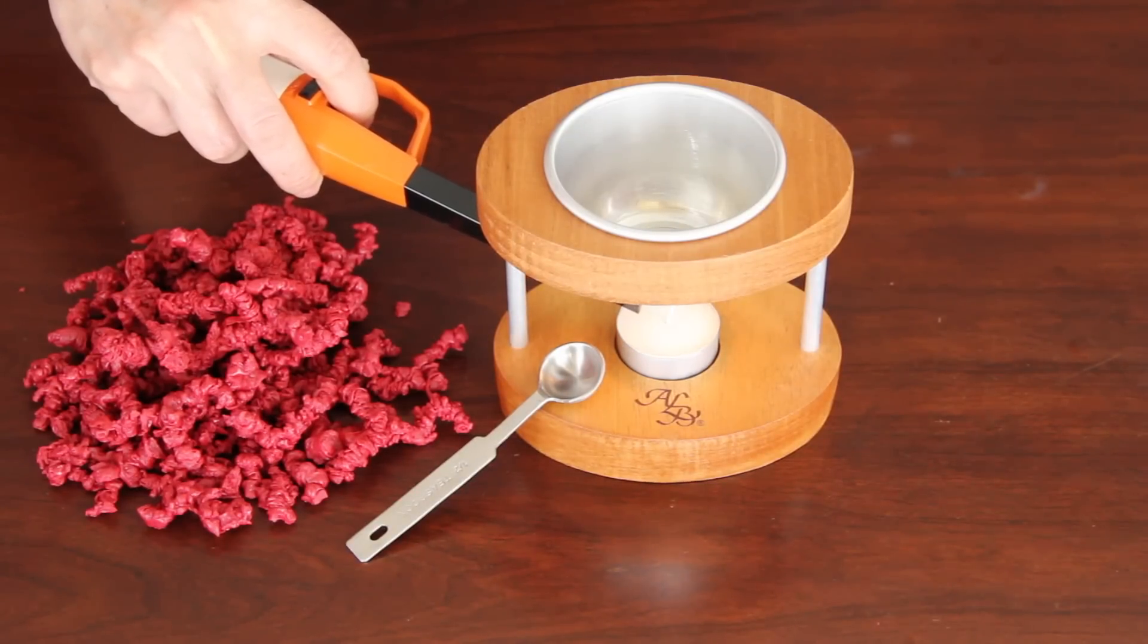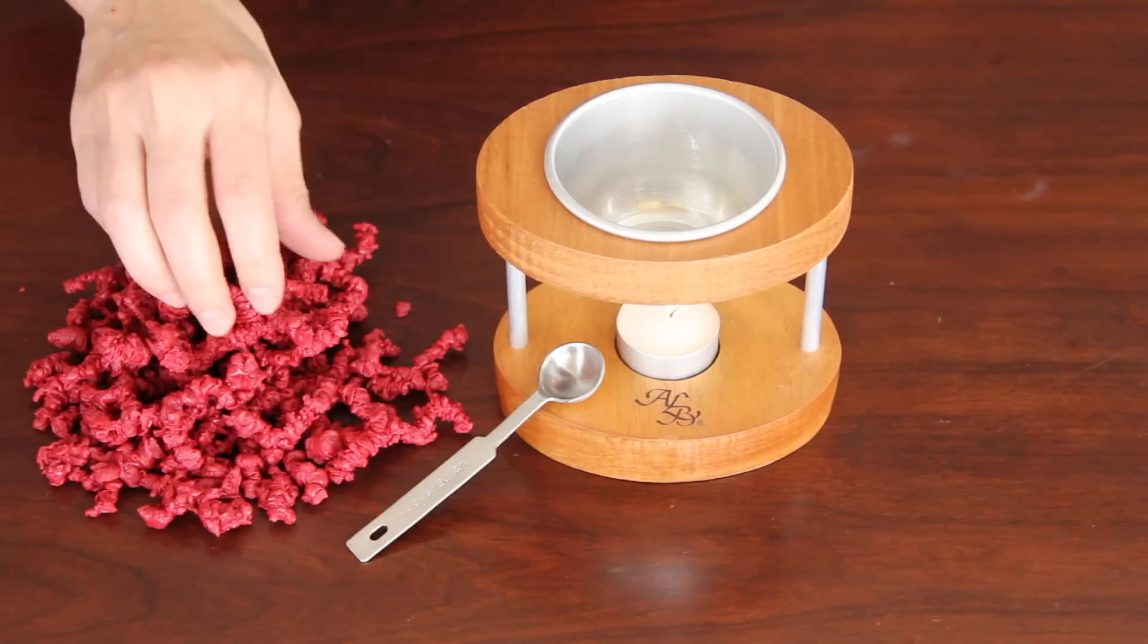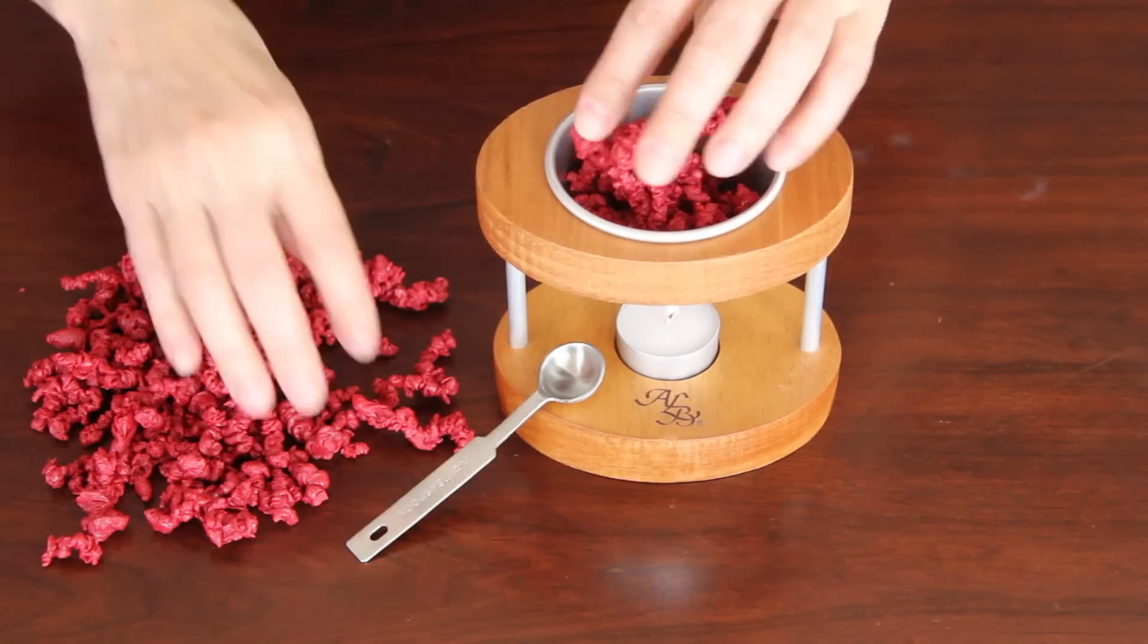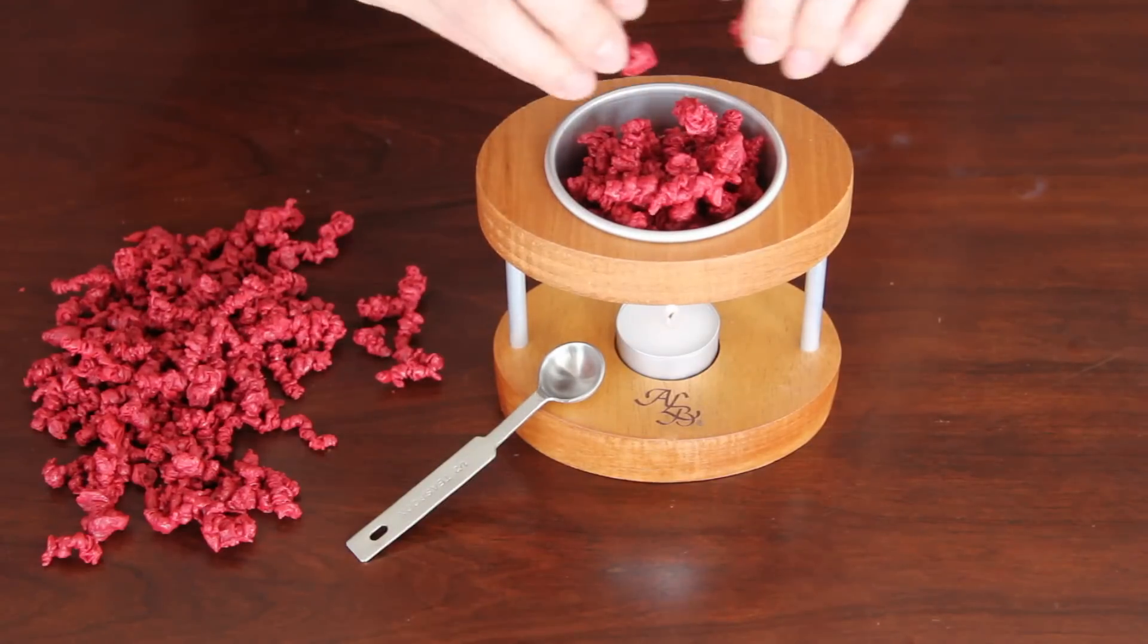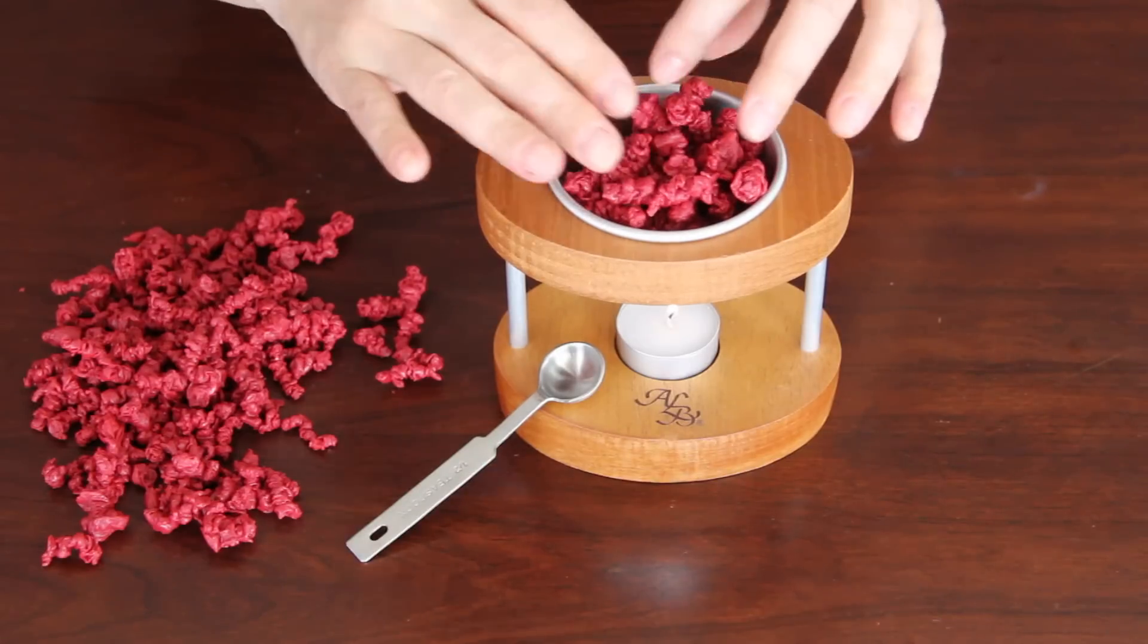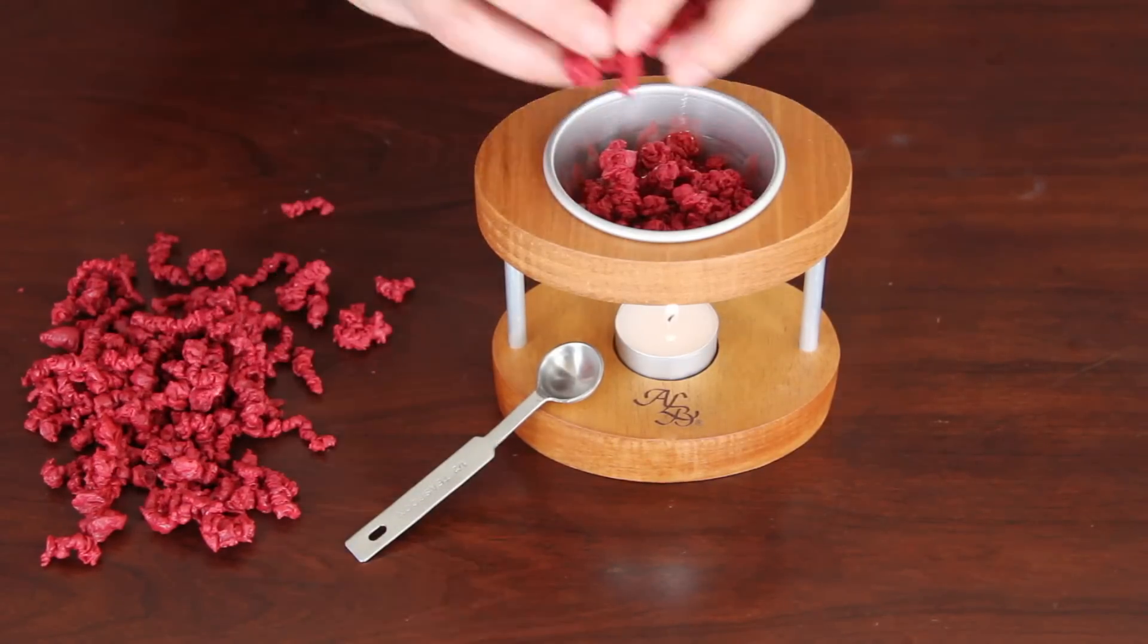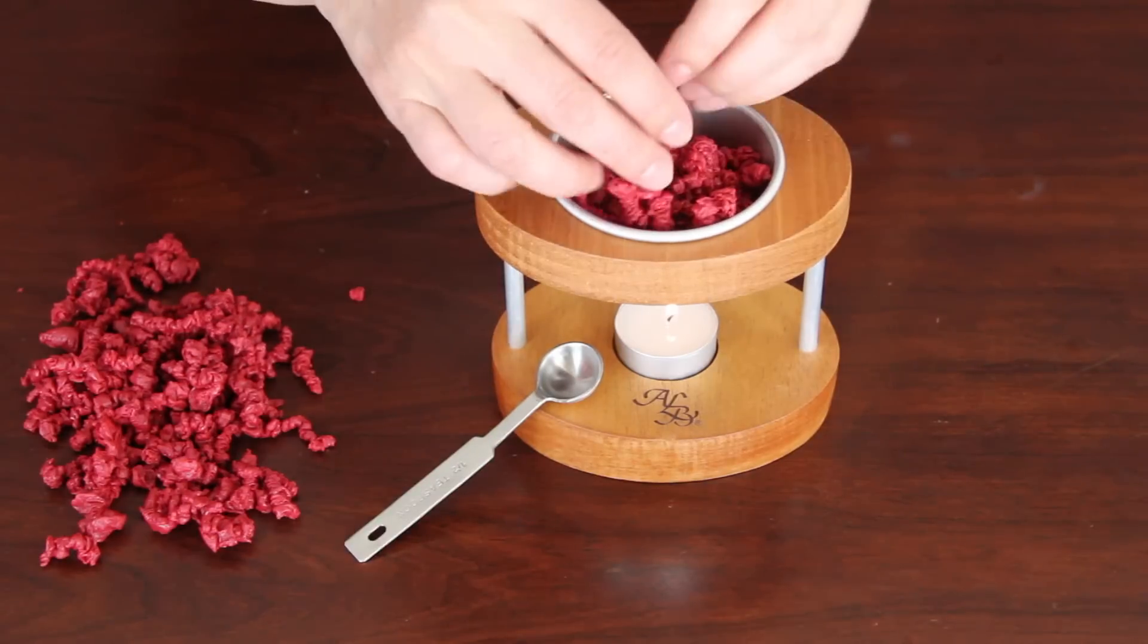Light the candle and fill the container with granulated wax. As the sealing wax melts, add more wax until it reaches a level that is about 2cm below the rim of the container to prevent overflow when dipping the bottle.